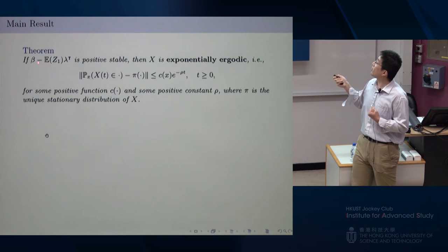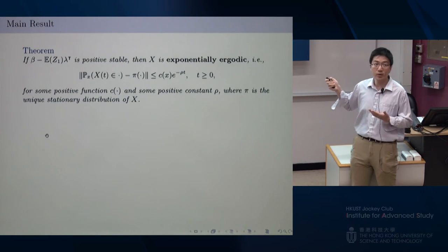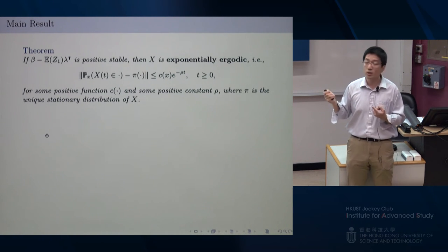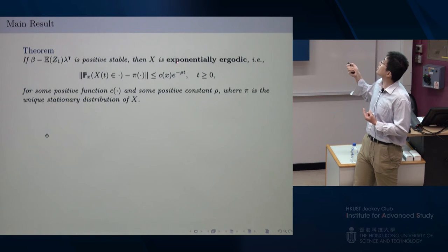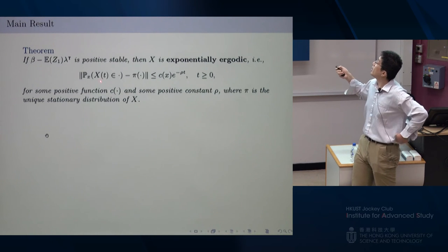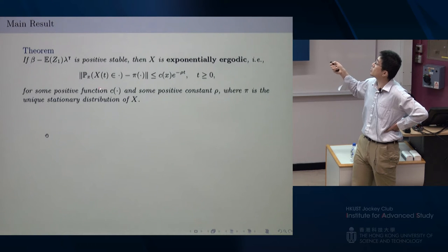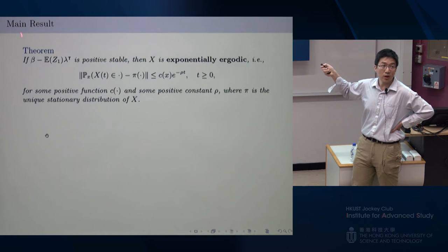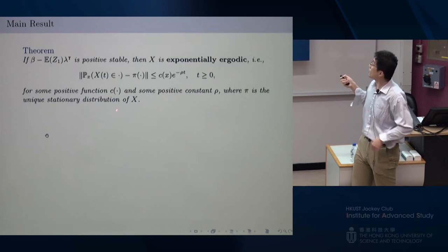Under this strong mean reversion condition — which is very simple and easy to check — I can show that this process is exponentially ergodic. This means the transition distribution of the diffusion process starting from a fixed point x converges to its unique stationary distribution exponentially fast, measured in total variation norm.